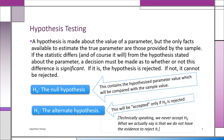The decision to reject or not reject H-zero is made based on looking at the sample evidence. Either we're going to reject H-zero — essentially telling the company they're lying — or we don't reject, which we call 'accepted' in quotes, because we technically don't really accept H-zero; we just don't have the evidence to reject it. The sample evidence is going to be used to make this decision.